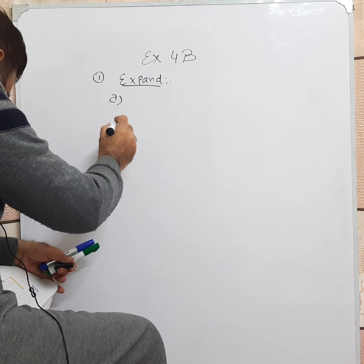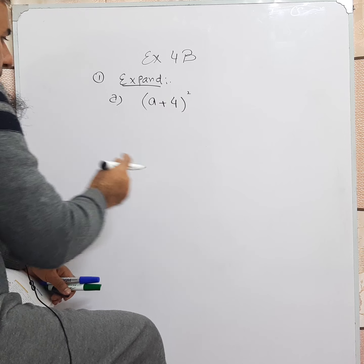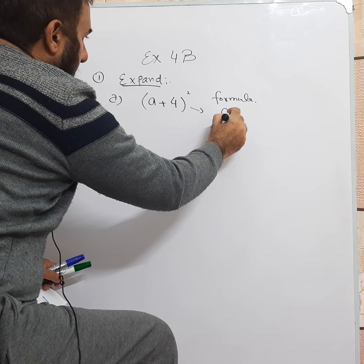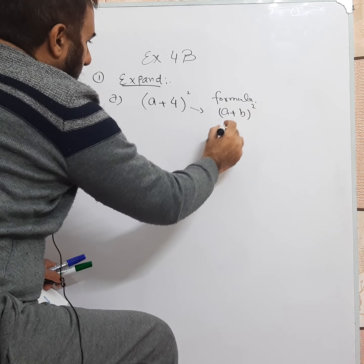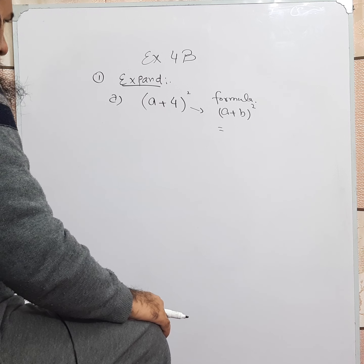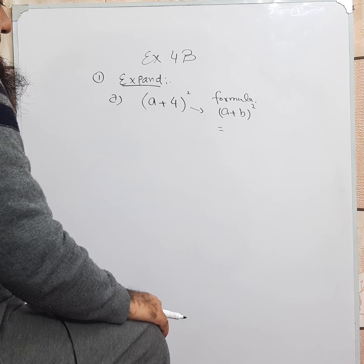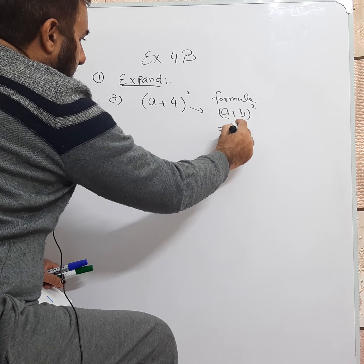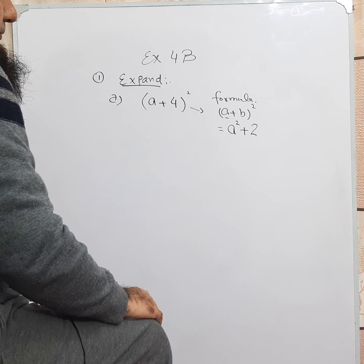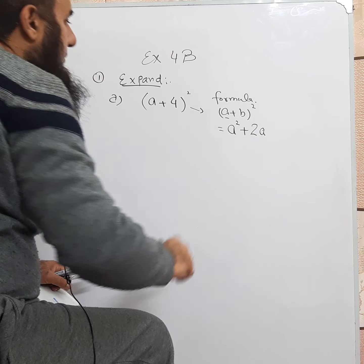Question 1: expand the following expressions. We will be doing part A: (A plus 4) whole square. Here we will be applying the formula A plus B whole square. The formula says when you have two variables with a plus between them and there is whole square, then we open this bracket. This is the first term and this is the second term.